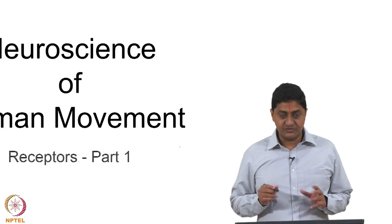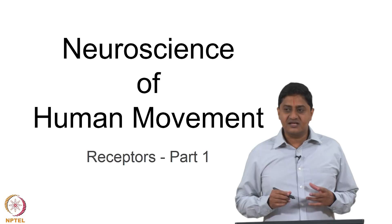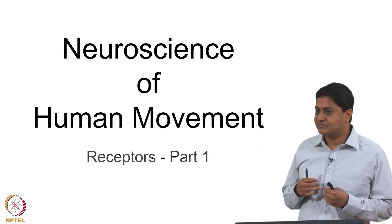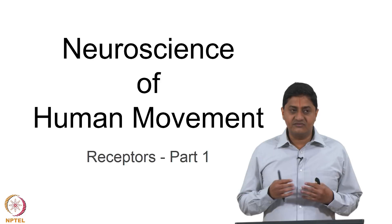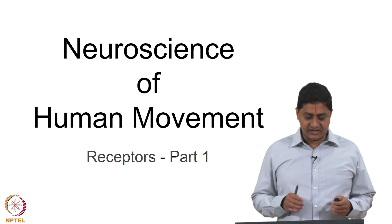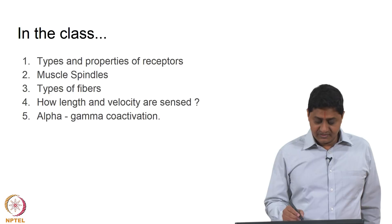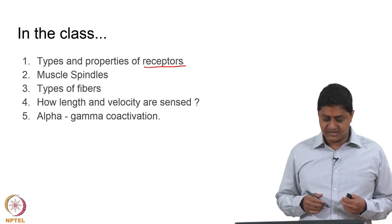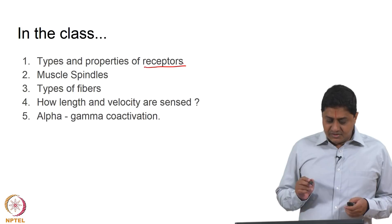Welcome to this class on neuroscience of human movement. This is a class on receptors — more specifically, a class on muscle spindles, a special type of sensors responsible for detecting changes in muscle length and velocity. Their function is critical for the motor system. In this class we will cover the types of receptors, focus on muscle spindles, how length and velocity are sensed, and an important principle called alpha-gamma coactivation.